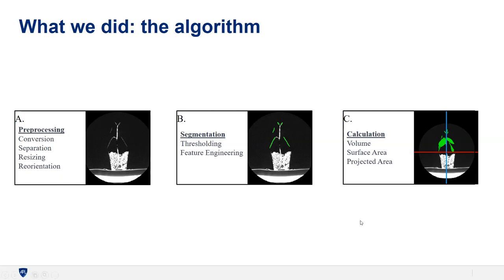The pre-processing step included file conversion, plant separation since multiple plants were scanned in a row for time efficiency, image resizing to normalize all directions, and manual orientation. The segmentation step included density thresholding to distinguish leaves from branches, plus feature engineering using a dilation algorithm to find and fill in leaves. Finally, the algorithm calculated volume, surface area, and projected area.